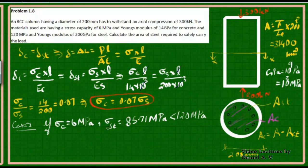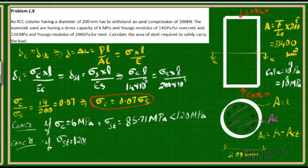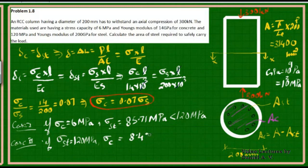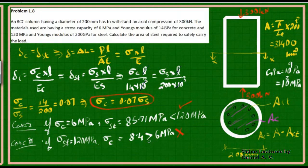Case 2: if sigma_S is stressed to its maximum of 120 MPa, then sigma_C = 0.07 × 120 = 8.4 MPa, which exceeds the concrete capacity of 6 MPa. This condition is not acceptable. So we work with sigma_C = 6 MPa and sigma_S = 85.71 MPa.